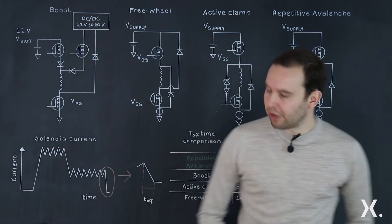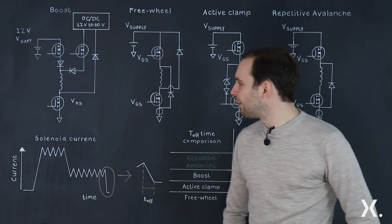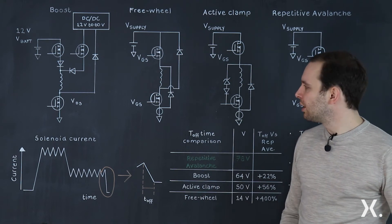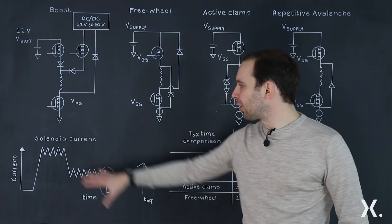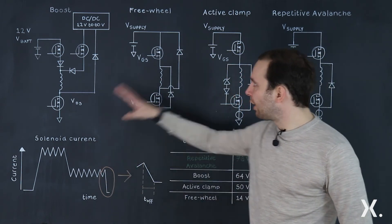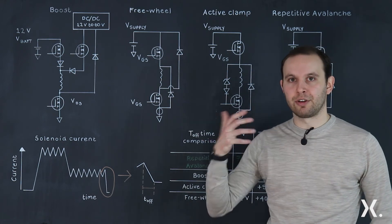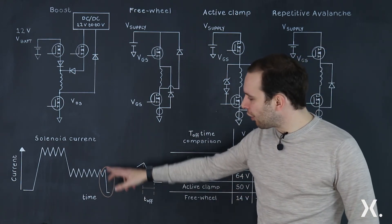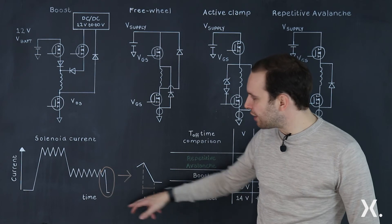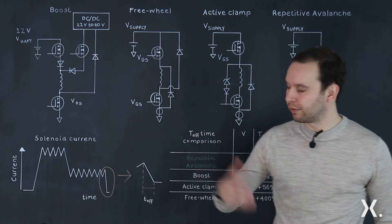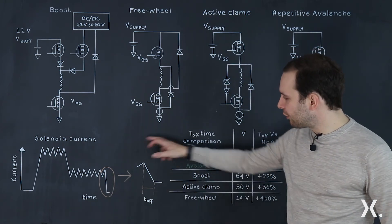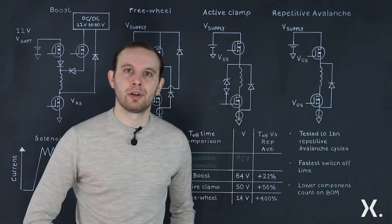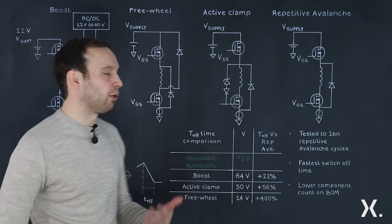The general functionality is common across all four designs. If you look at the solenoid currents, in all these designs they are similar for general functionality. The difference is at the turn-off — the falling edge of each cycle — so the turn-off event. Here we've drawn a comparison of the four designs.